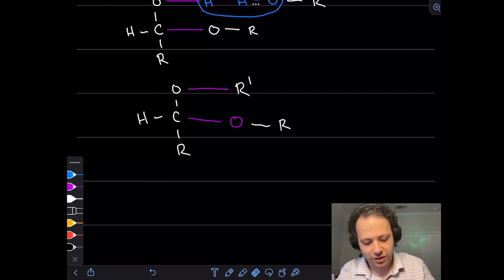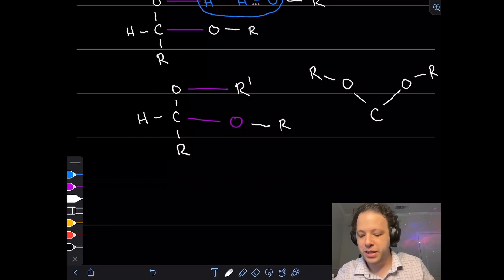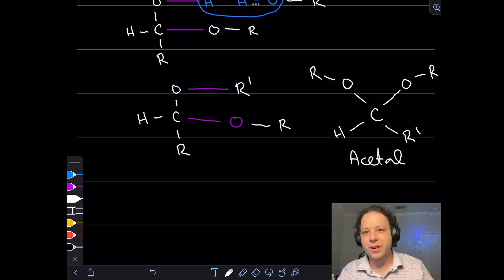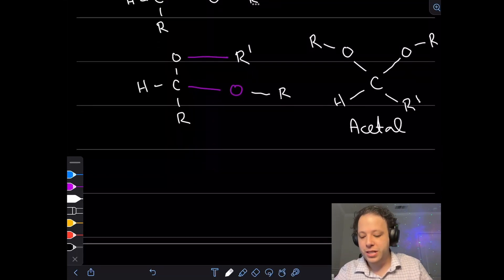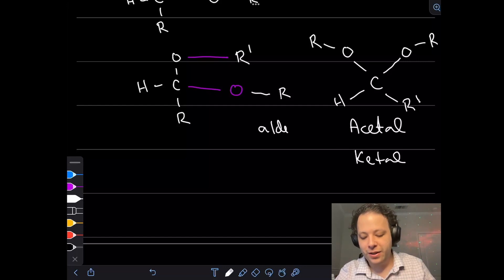So now we have our signature look here of two oxygens, so that's the little googly eyes, both connected to the same carbon. If we want to redraw that for ourselves, we have our carbon with an oxygen, two of them both pointing in different directions with different R groups potentially on each side. This is what we refer to as an acetal. Acetal is when it originates from an aldehyde versus a ketal is when it is from a ketone.